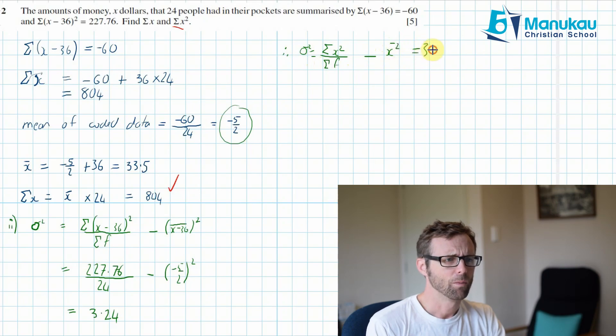Now, we don't know that. So that's what we're trying to find. We do know this is 24. We do know the mean of our uncoded data. That's this one here. So I'm going to subtract 33.5, and I'm going to square that. And that is meant to equal to 3.24.